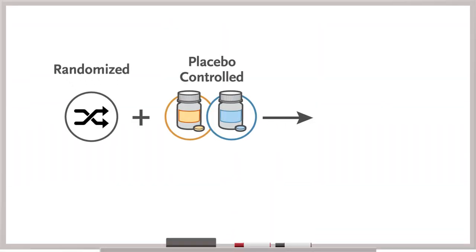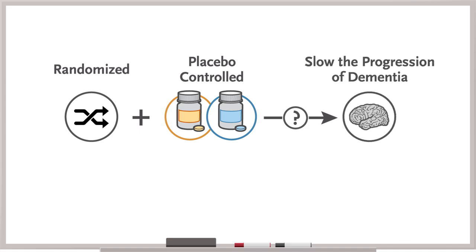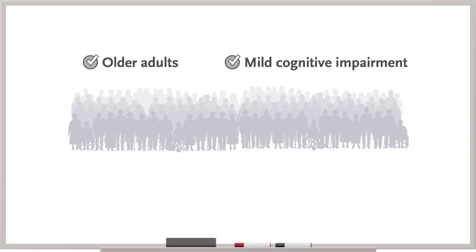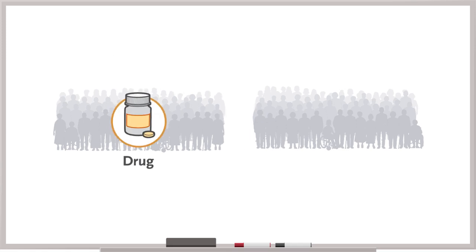Let's talk through an example. Consider a randomized, placebo-controlled trial testing a new medication that aims to slow the progression of dementia. The trial randomly assigned older adults with mild cognitive impairment to receive either the new drug or placebo.